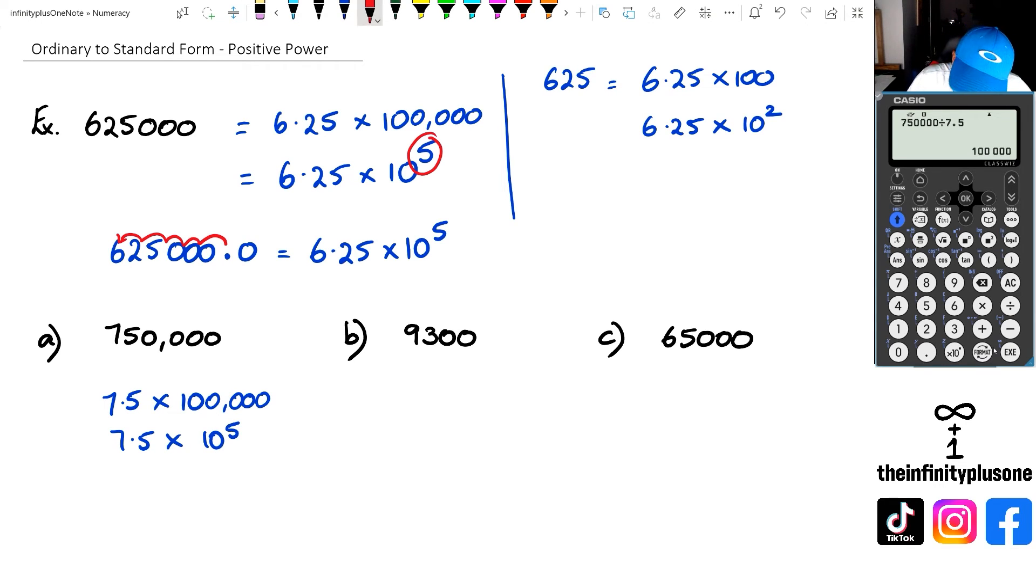And if you notice, 750,000 could be written as 750,000.0. If I'm moving that decimal point 1, 2, 3, 4... I'm actually moving 5 spots. So I know I'm doing the right thing there.